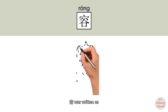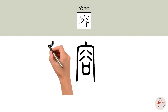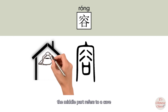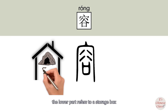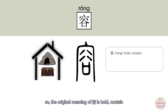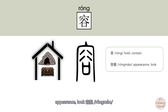In ancient Chinese, 容 (rong) was written with three parts: the upper part refers to a house, the middle part refers to a cave, and the lower part refers to a storage box. House and cave are places for storage, so the original meaning of 容 is to hold or contain. The exact modern meaning is appearance or look — 容貌 (rong mau).